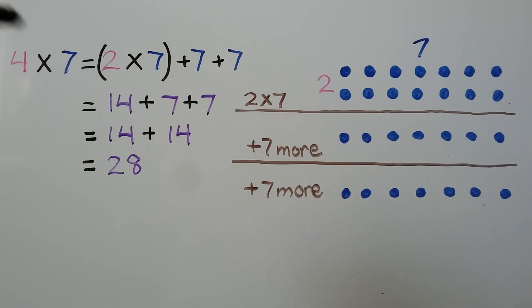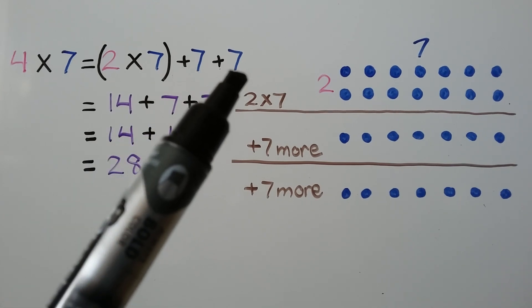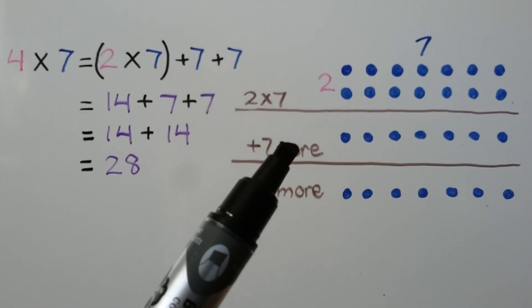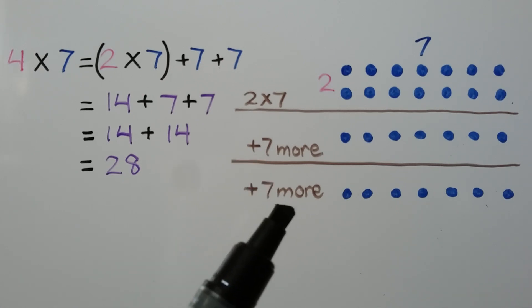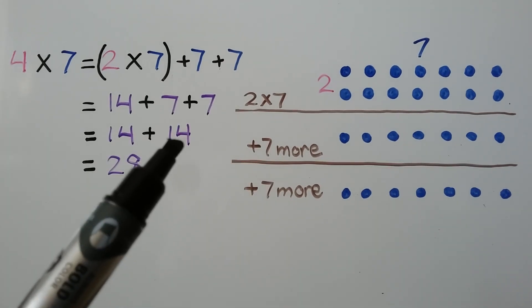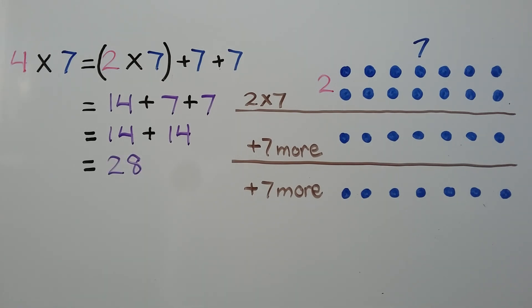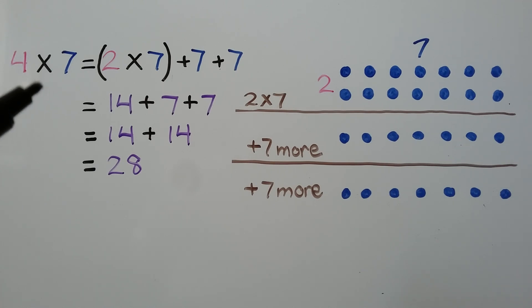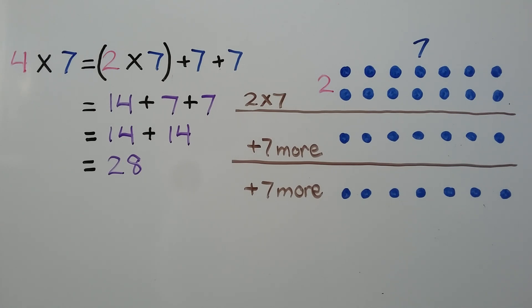If we know that 2 times 7 is equal to 14, we can add another 7. We can do 2 times 7 and then add 7 more, then add 7 more again. 7 plus 7 is 14, and 14 plus 14 is equal to 28. It's very helpful to break apart one of the factors when the multiplication facts are large, like 8 times 9 or 6 times 9. Breaking them apart makes it easier because you can use facts you already know, and you can use doubles when one of the factors is even.